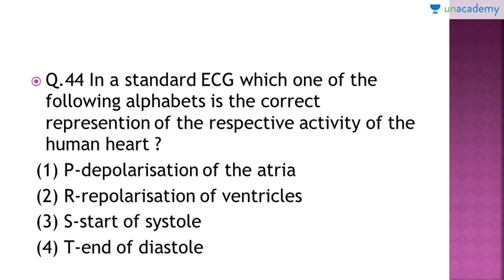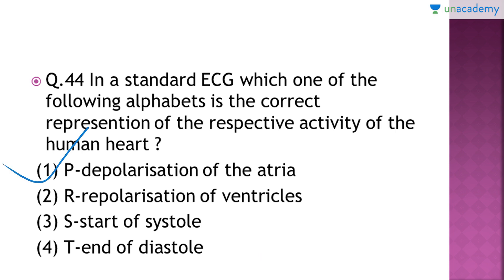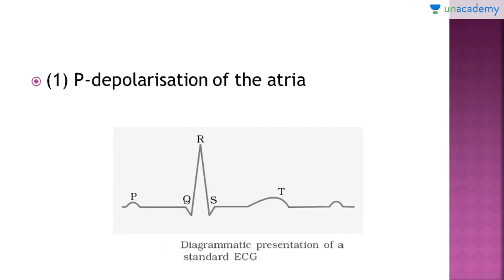Question number 44: in a standard ECG, which alphabet correctly represents the respective activity of the human heart? It's a very easy question if you have observed the ECG carefully. The right answer is option number one — the P wave represents the depolarization of the atria.